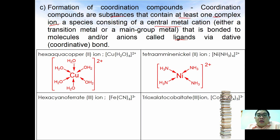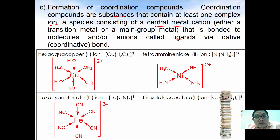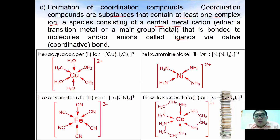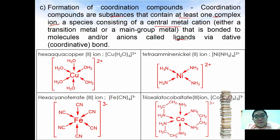Other examples include the tetraammine nickel(II) ion, hexacyanoferrate(III) ion, and trioxalatocobaltate(III) ion. All these structures are called complex ions. Making use of dative bonds, these complexes are possible to exist. That covers all about coordination compounds.